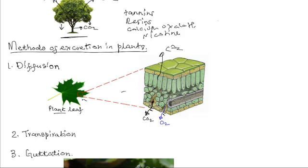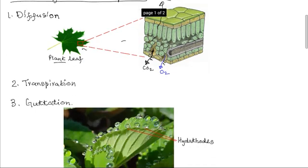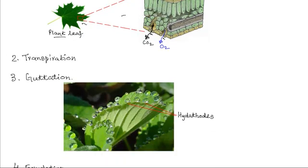Then there is guttation. Guttation is the removal of excess water in liquid form, through specialized openings called hydathodes. In the margins of the leaves of certain plants, there are special pores known as hydathodes, through which water in liquid form oozes out.